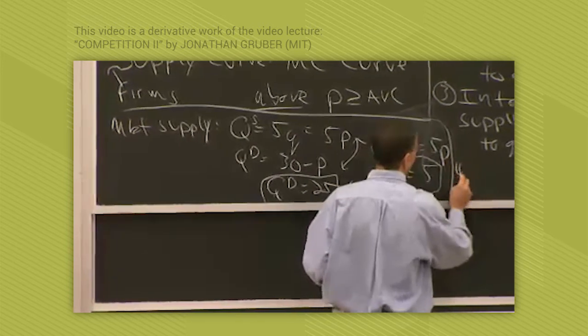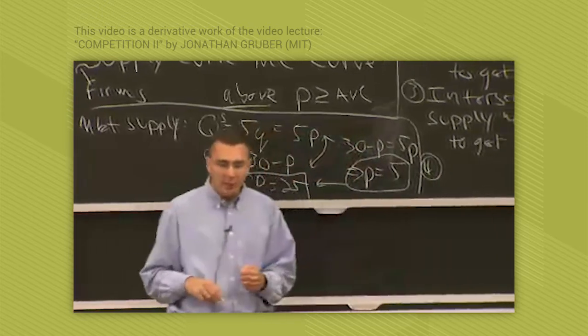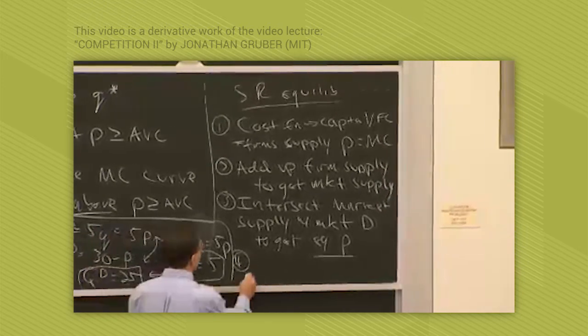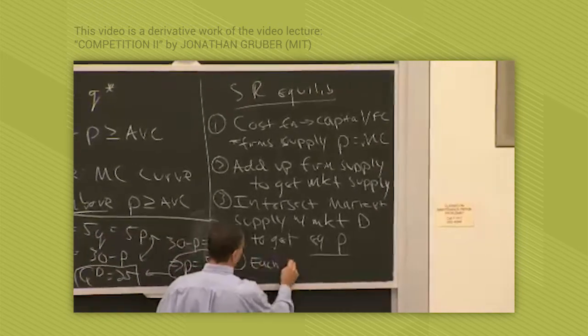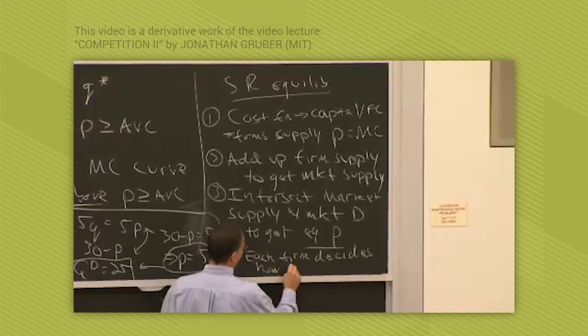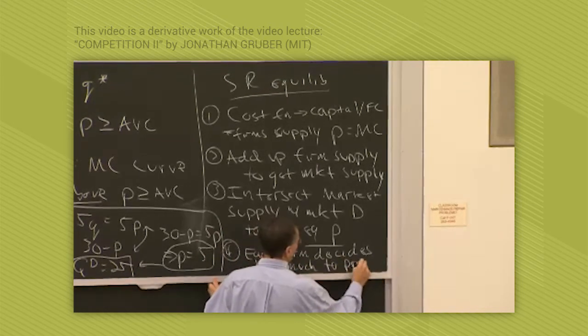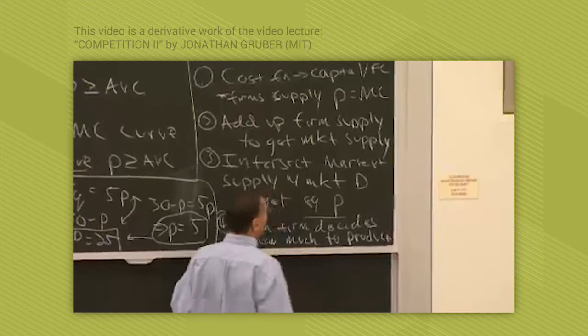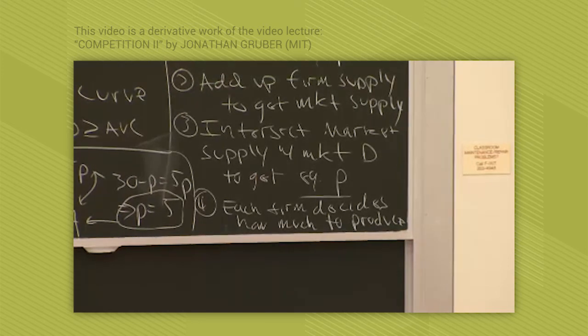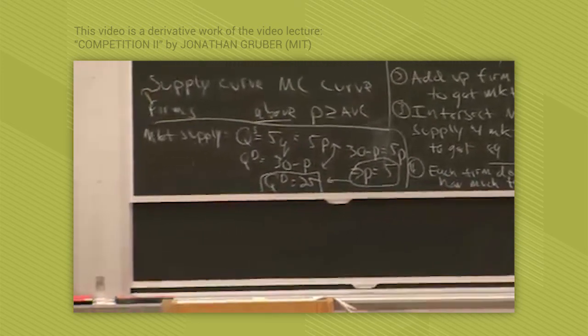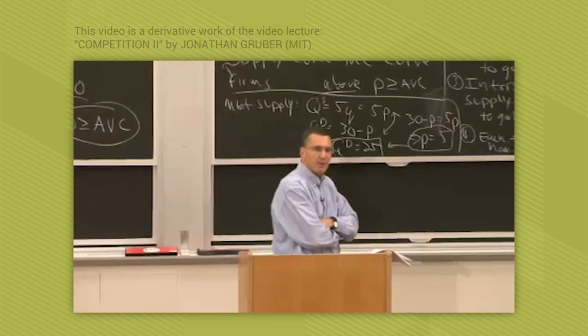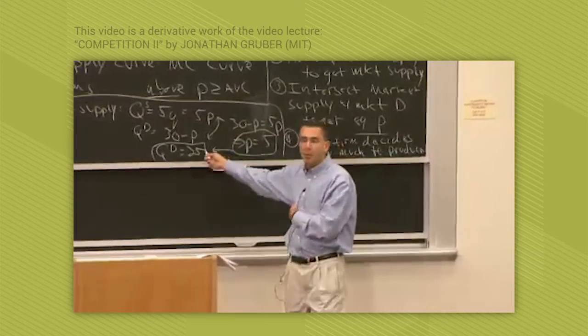Then the final step in solving for equilibrium is that each firm then decides how much to produce. What is each firm going to decide to produce? How much is each firm going to decide to produce? Somebody raise their hand and tell me. P, which is? Five. Five. How much gets produced? Which is exactly what people want. We're done.